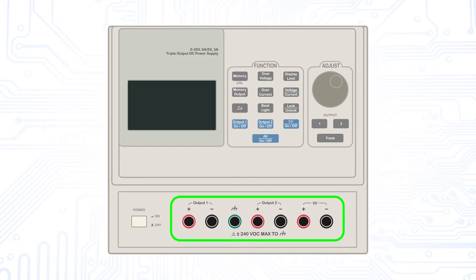It has three outputs, two of them being able to output a voltage range of 0 to 30 volts and a maximum of 6 ampere and one output providing fixed 5 volts and a maximum of 3 ampere.